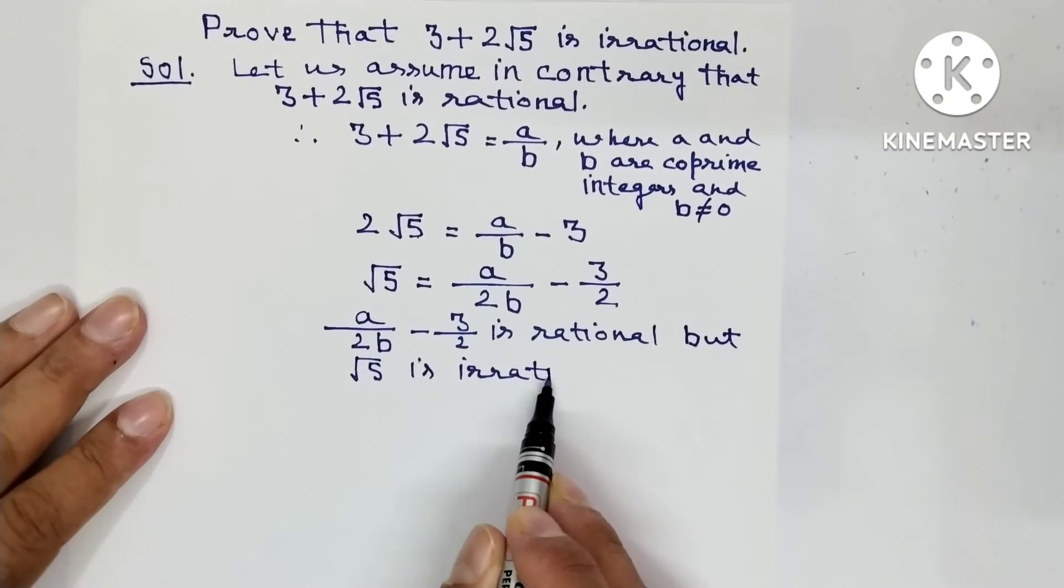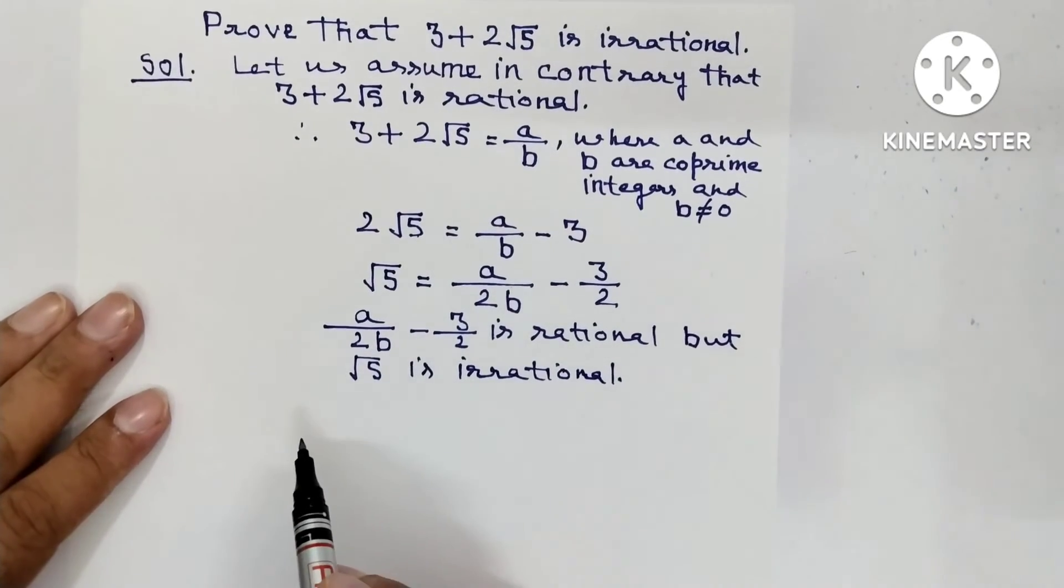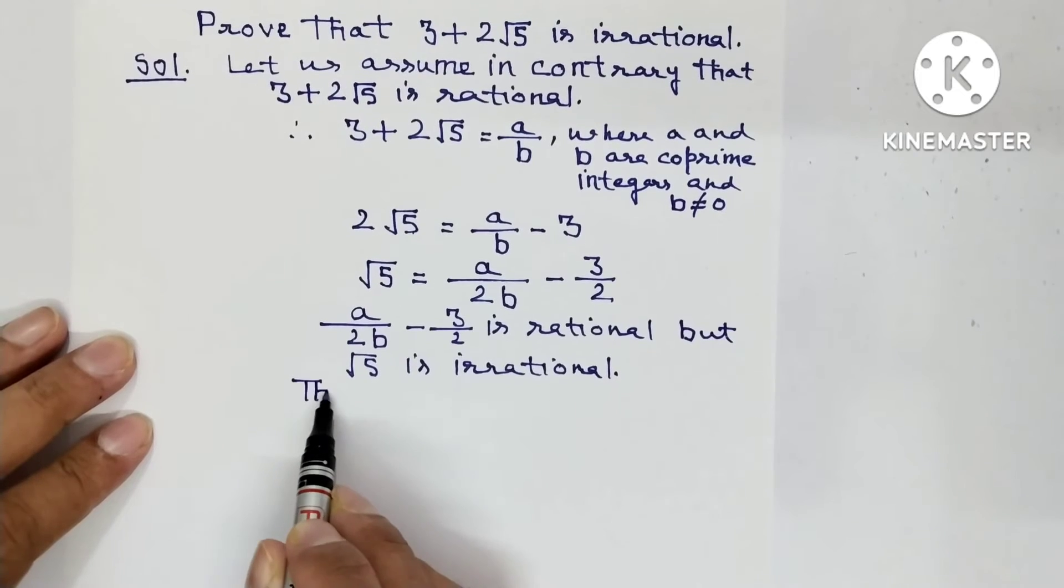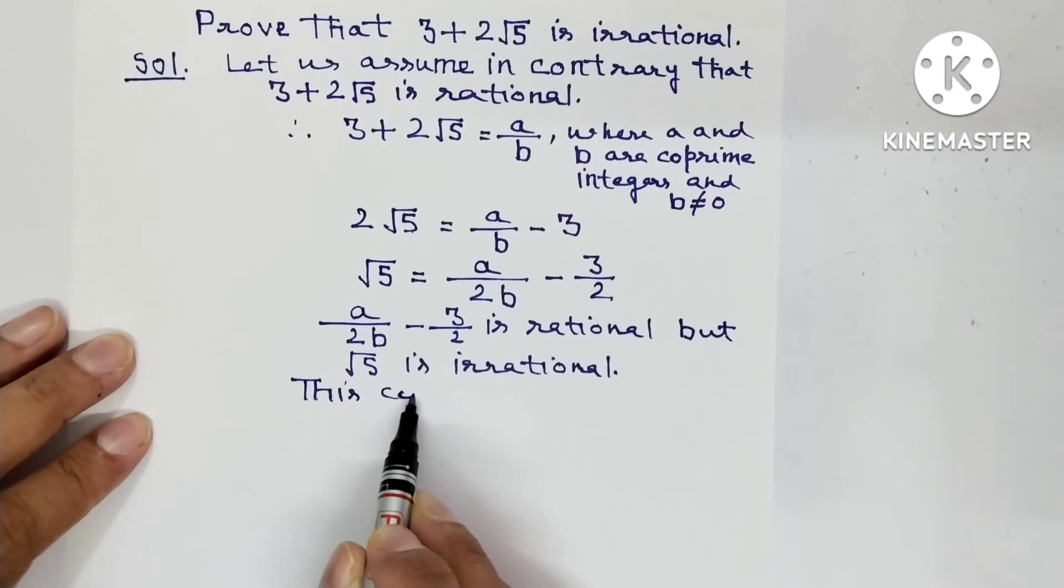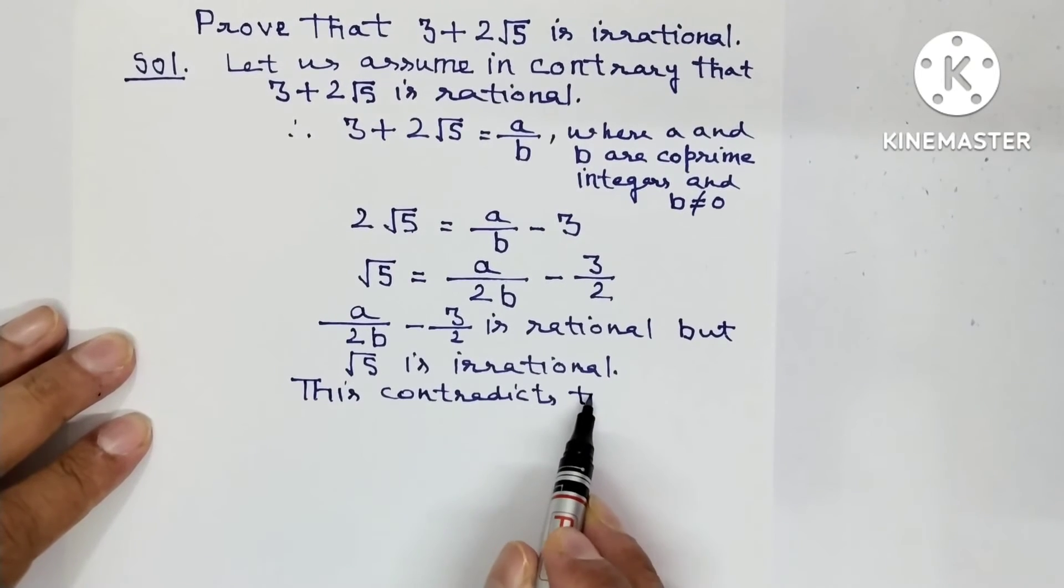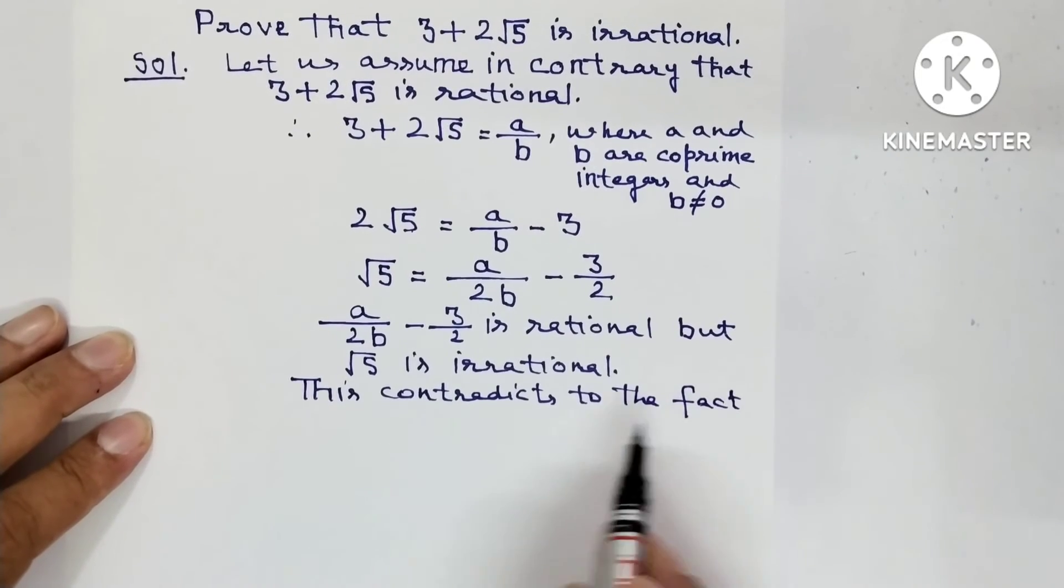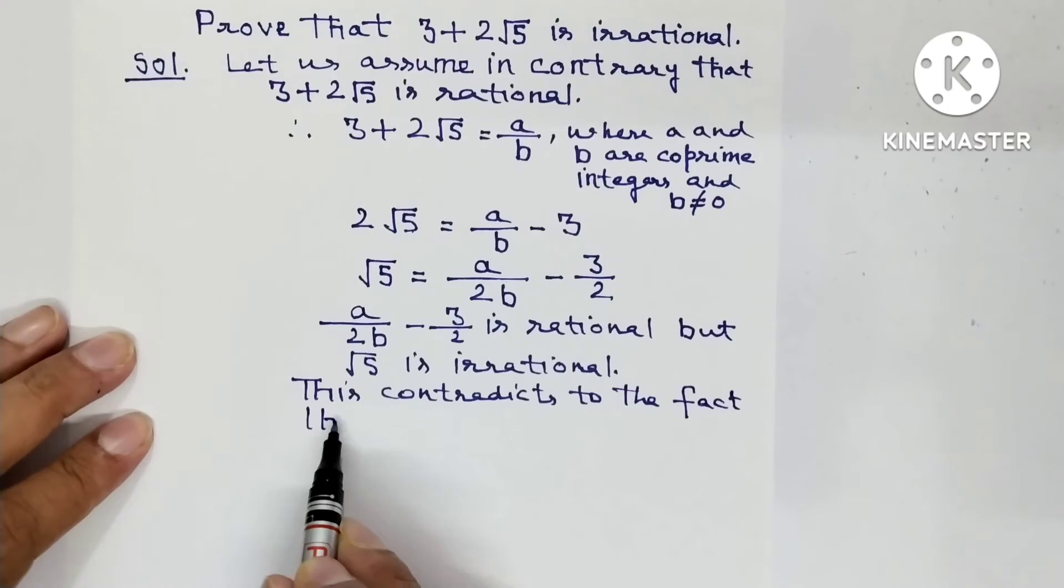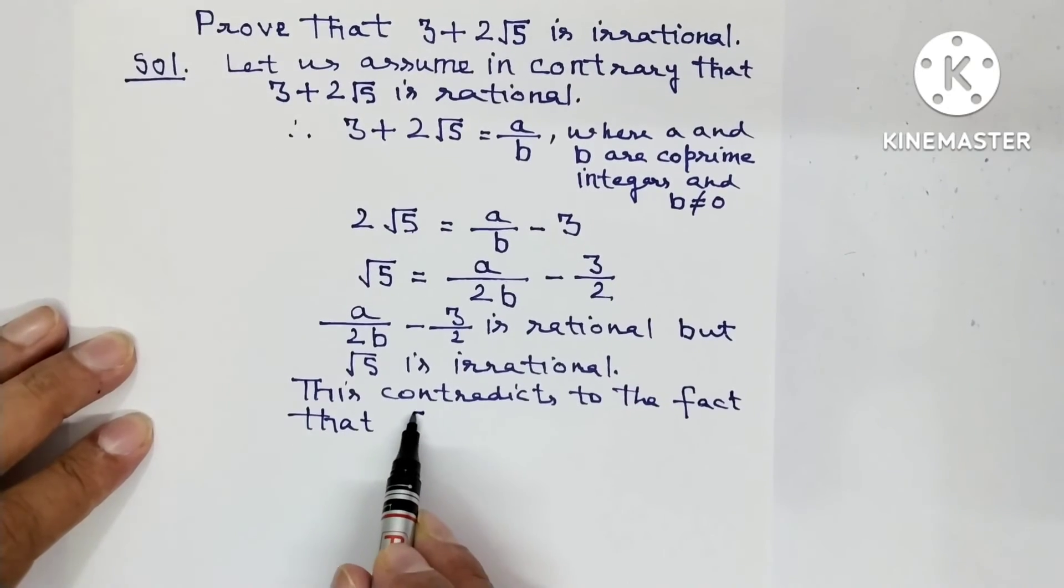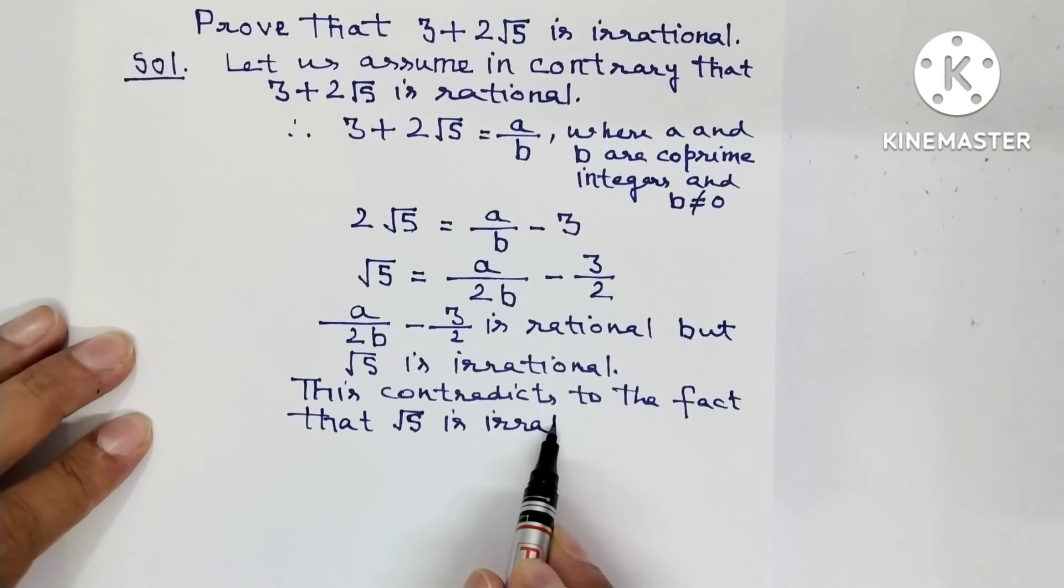This contradicts to the fact that under root 5 is irrational.